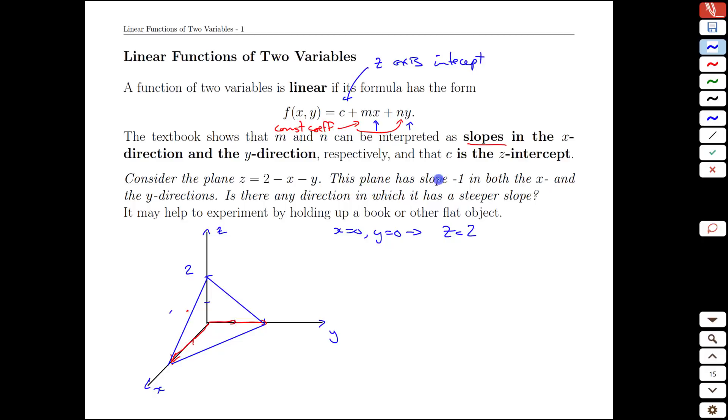Now we're asked a different question about this. We have slopes of negative 1 in both the x direction and the y direction. Take a step in the y we go down by 1 in z. Take a step in the x direction we go down by 1 in z. Is there another direction where we would find a steeper slope? And notice that's a perfectly valid question to ask because now we have a whole host, in fact an infinite number of directions we could walk in if we talk about directions of motion in the xy plane.